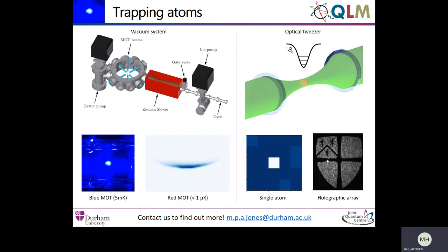Once we have our cloud of cold atoms we can then use optical tweezers to pick out individual atoms. An optical tweezer is a tightly focused laser beam down to about a micron in size where atoms are attracted to the high intensity point of the focus.